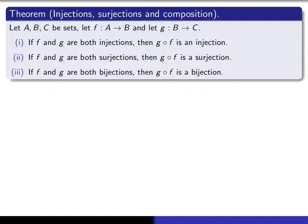We give ourselves three sets A, B, and C, and we give ourselves a function f from A to B, and then a function g from B to C. We'd like to know that if we assume certain conditions on f and g, then do we have a similar condition for the composition of those two functions.